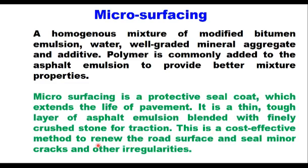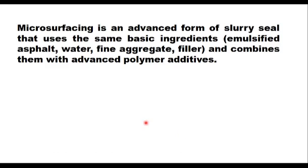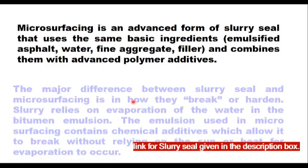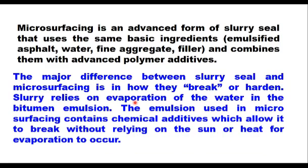Microsurfacing is a cost-effective method to renew the road surface and seal minor cracks and other irregularities in the pavement. It is an advanced form of slurry seal that uses the same basic ingredients — emulsified asphalt, water, fine aggregate, and filler — combined with advanced polymer additives. The major difference between slurry seal and microsurfacing is in how they break or harden: slurry relies on evaporation of water, whereas microsurfacing contains chemical additives which allow it to break without relying on the sun or heat.